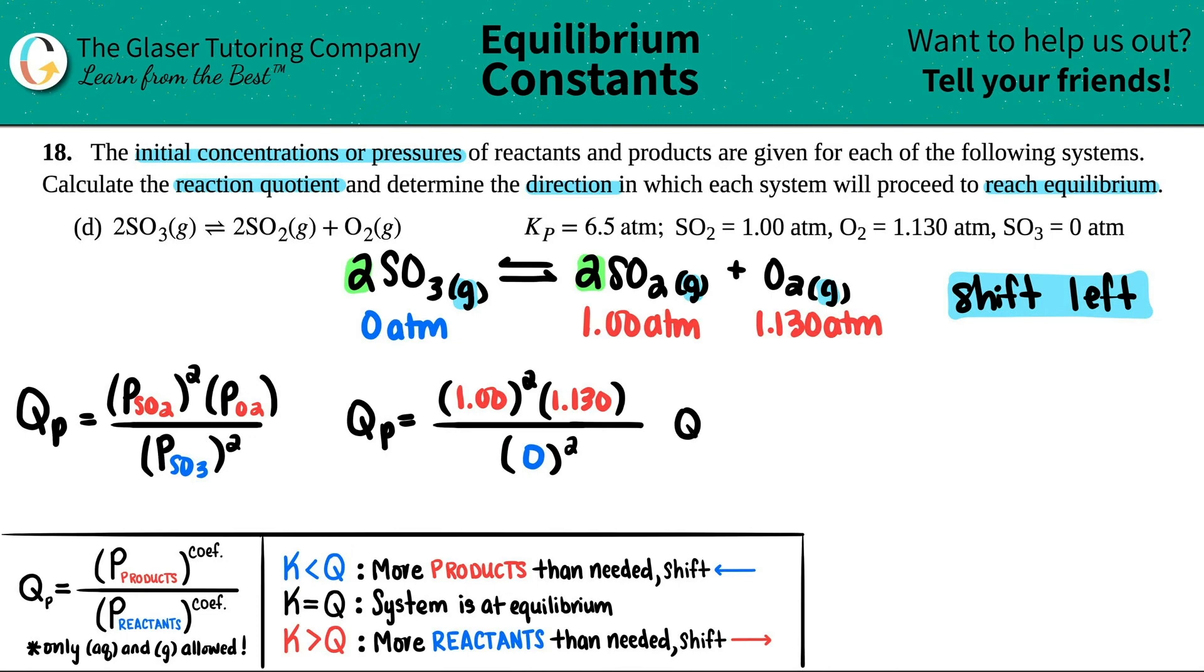Now let's just get a number for the top and the bottom. Qp equals - the first number, the numerator, would just be 1.130, and then the bottom would be zero. Uh-oh, remember anything divided by zero is undefined. There is no number for it, so you would not have a number answer for this. This is undefined.